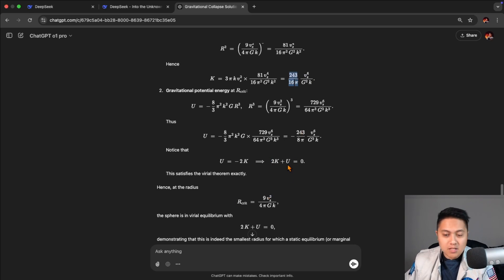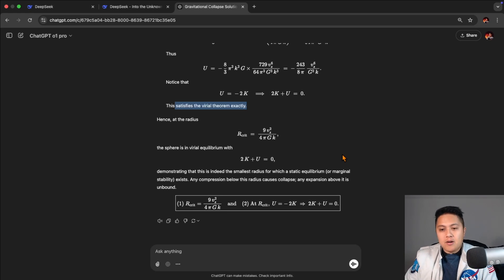And so it's able to satisfy the Virial theorem exactly. And so both models were able to take down this astrophysics problem. I thought that was fairly impressive, because like I said at the start of this video, I don't believe these problems have been solved before and are available anywhere on the internet. And so I had to go and do it.